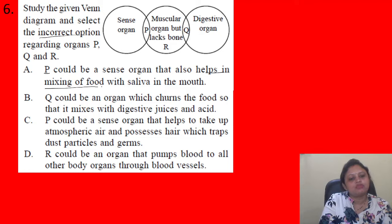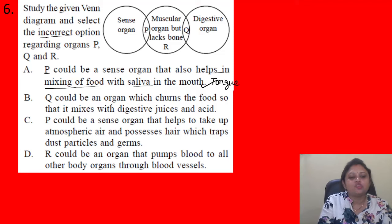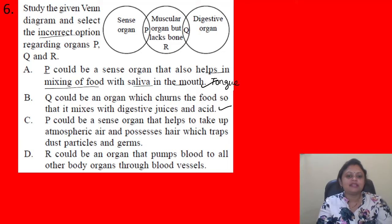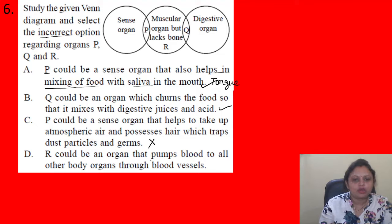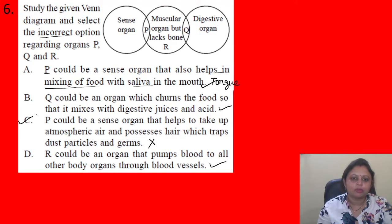P is a sense organ, muscular but lacks bone — this could be the tongue, which helps mix food with saliva. So option A is correct. Q is a digestive and muscular organ — this could be the stomach, which churns food and mixes it with digestive juices and acid. Option B is correct. Option C says P helps take up atmospheric air and has hairs that trap dust — that does not match the tongue. Option D, R pumps blood, could be the heart. So option C is the incorrect statement.